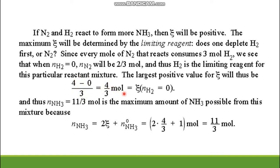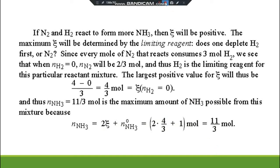With Xi = 4/3, the amount of ammonia produced is: N_NH3 = 2 × (4/3) + 1 = 8/3 + 1 = 11/3 moles. So when Xi is at its maximum positive value of 4/3 mole, there are 2/3 moles of unreacted N2 and 11/3 moles of NH3. The range of Xi for this reaction mixture is −1/2 ≤ Xi ≤ 4/3 moles.